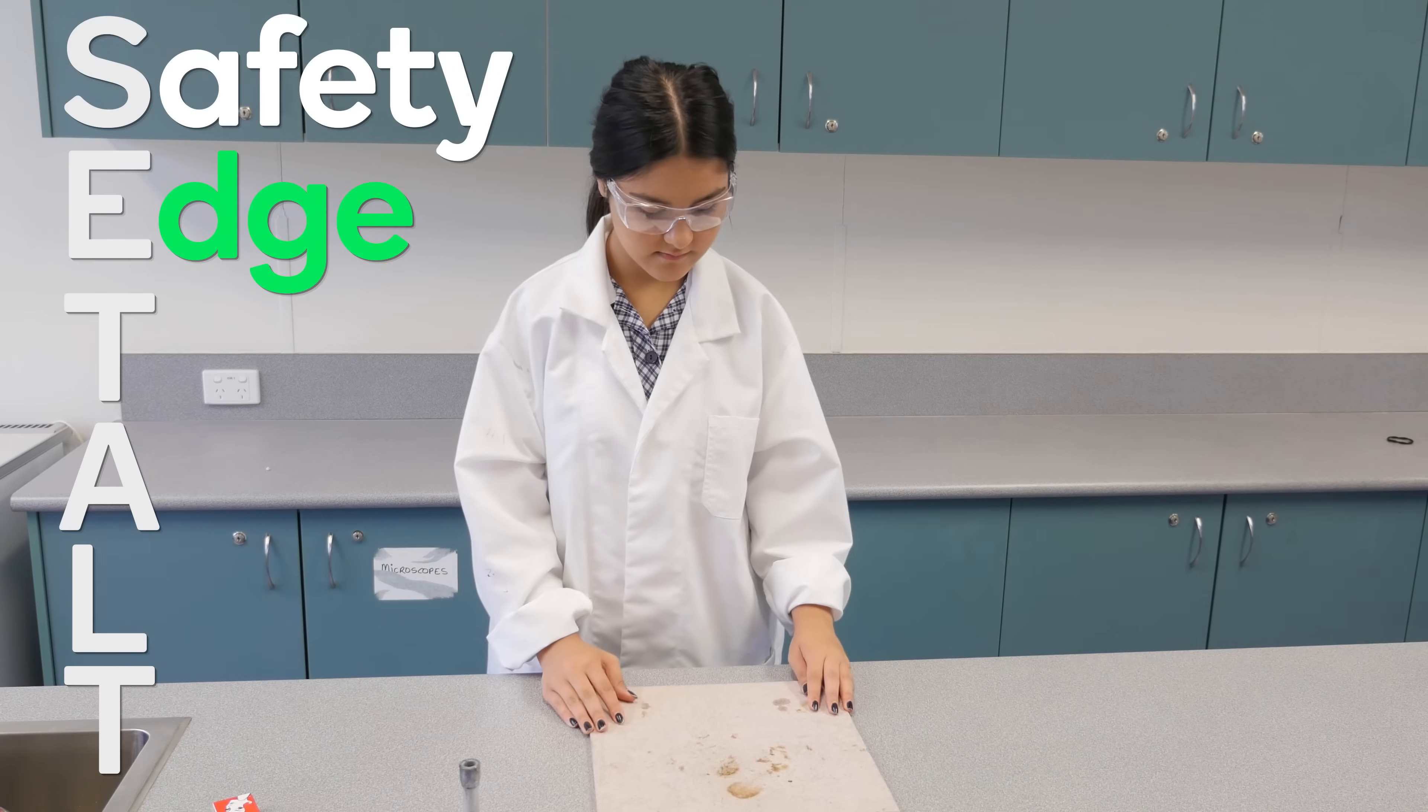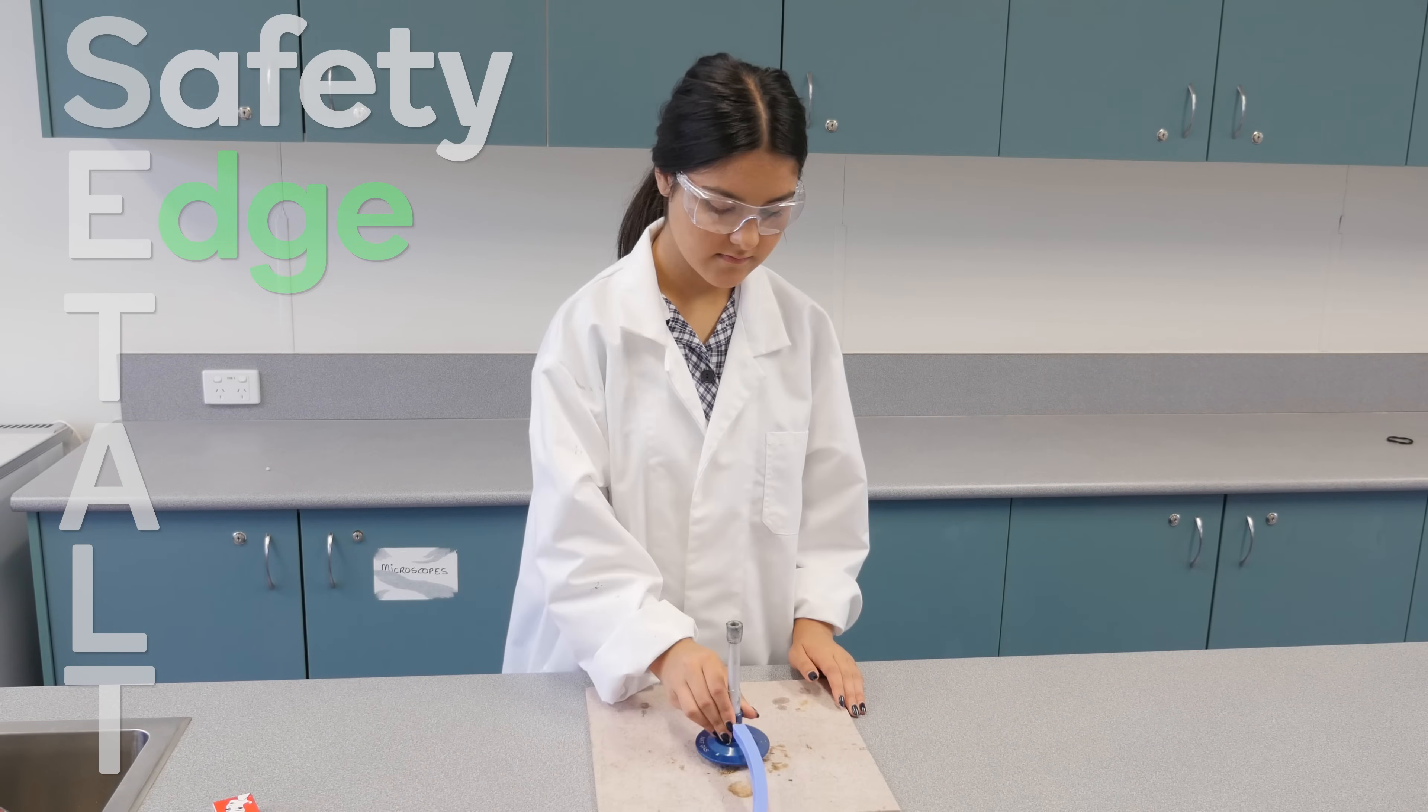E is for edge. Place the burner on a heatproof mat a safe distance from the edge of the bench.